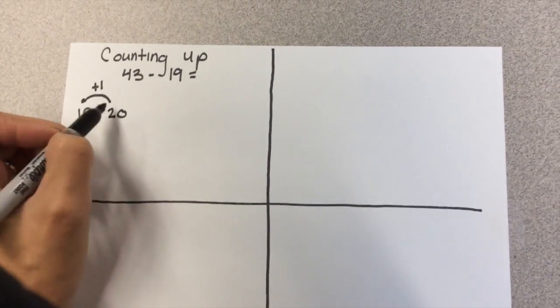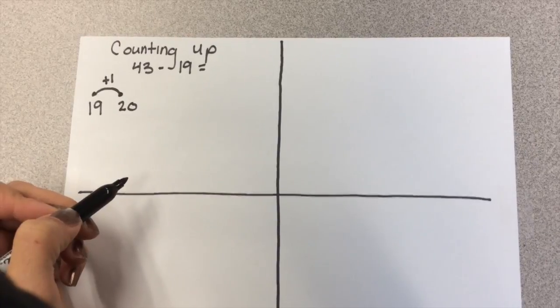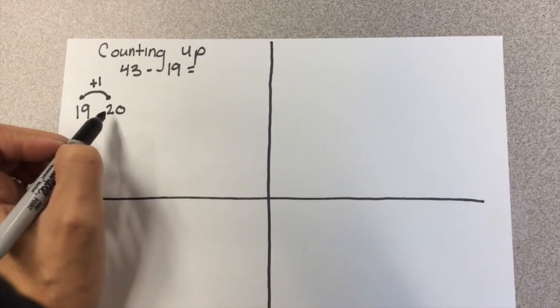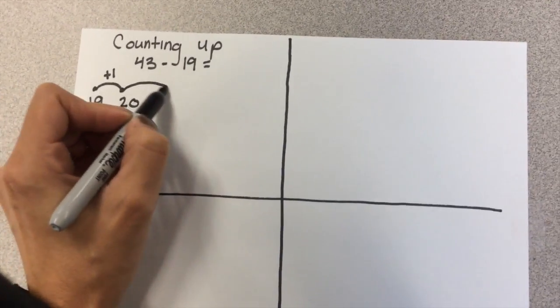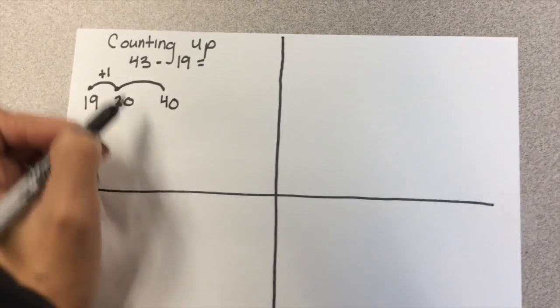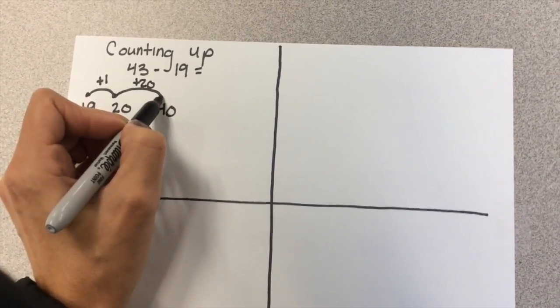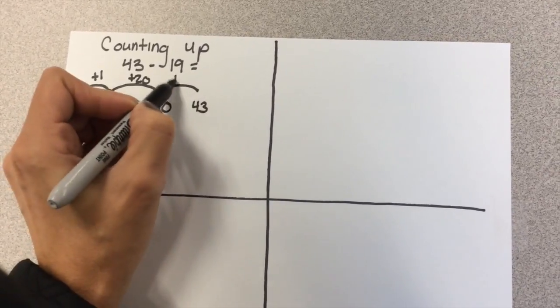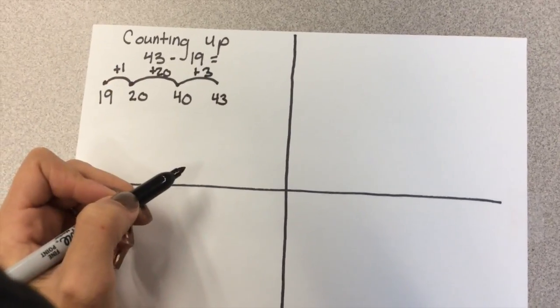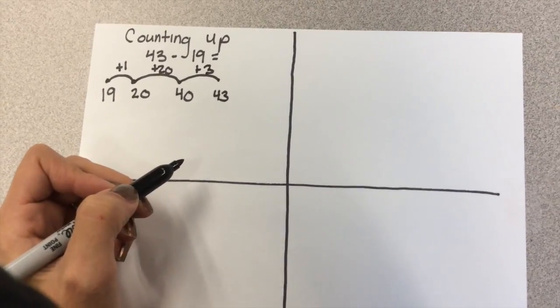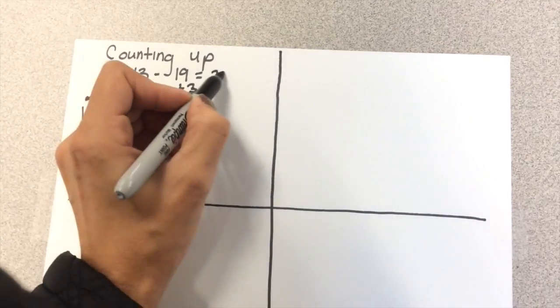From this point now, children really have a choice of what's best for them. Some students will see that from 20 they can jump all the way to 40, and they jump 20. Then from 40 they jump again to 43. Then they ask themselves how many times did they jump? They jumped 24 times.